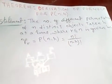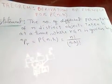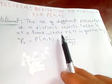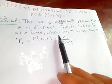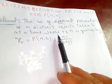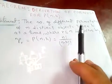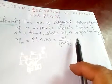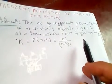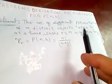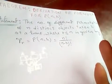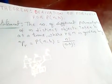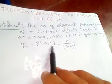Thanks for watching my video. Today I'm going to discuss the permutation formula. First of all, let me explain about permutation. Permutation means it is just an arrangement of objects in a definite order, taken r at a time — taken some or all at a time. That is what we call permutation.